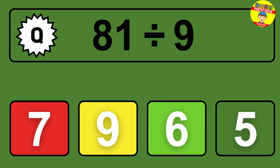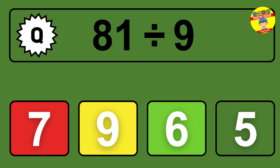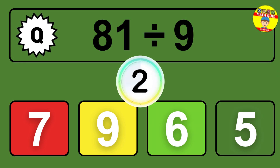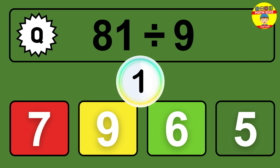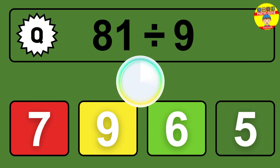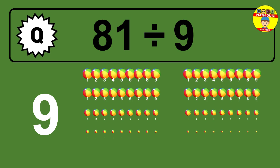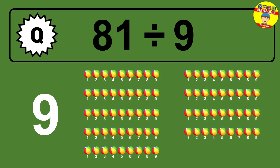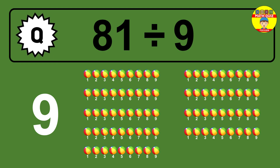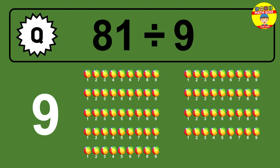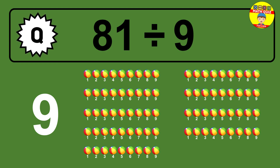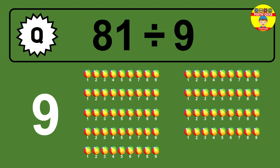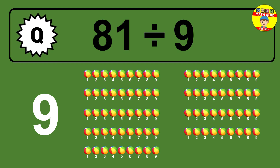81 divided by 9 — time to think. Let's go to the solution. Divide the number 81 by 9. Each group contains 9 units, so dividing 81 by 9 results in 9 equal groups. Thus, the result is 81 divided by 9 equals 9.